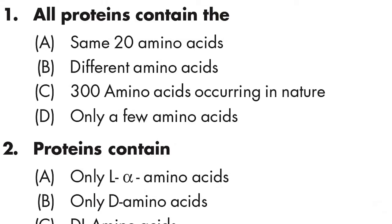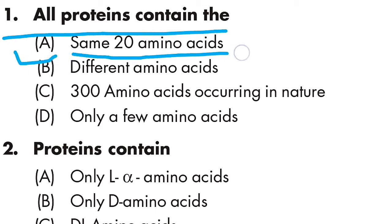Hello friends, we are discussing MCQ in biochemistry today. We are discussing protein and protein metabolism. This is a quick revision video. Question number one: do all proteins contain the same amino acids? The options are: same 20 amino acids, different amino acids, 300 amino acids occurring in nature, or only a few amino acids. The correct answer is: all proteins contain the same 20 amino acids.